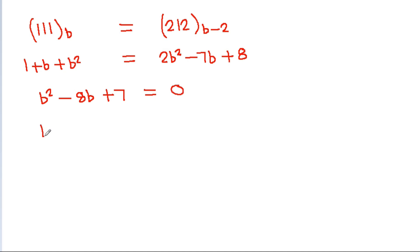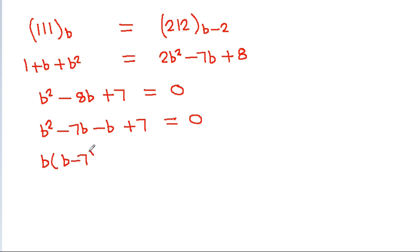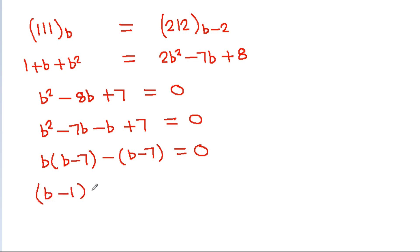This simplifies to b squared minus 8b minus 7b, giving b squared minus 7b minus 8 equals 0. Factoring: (b-1) times (b-7) equals 0, so b equals 1 or b equals 7.